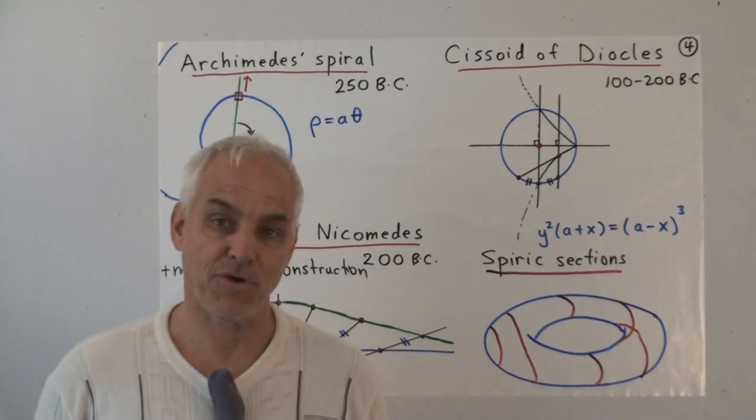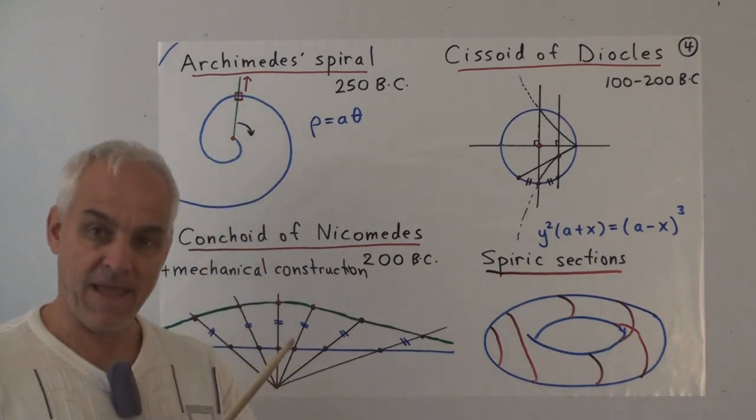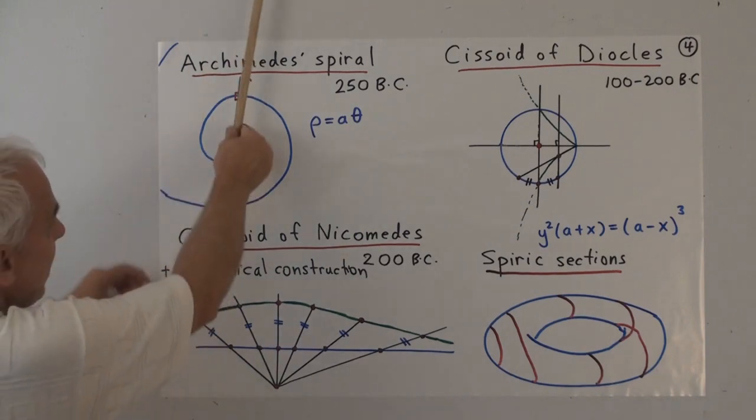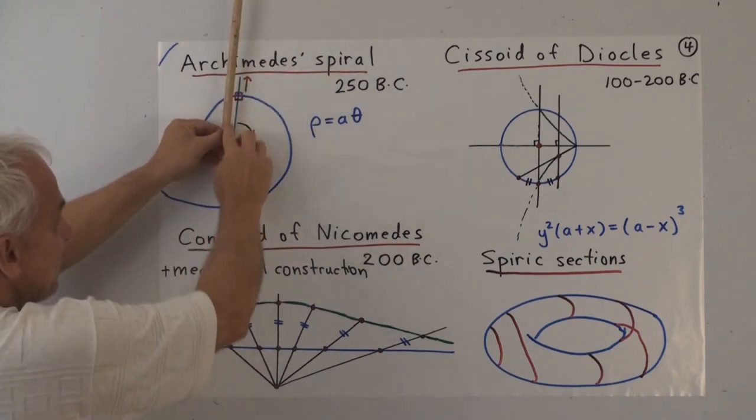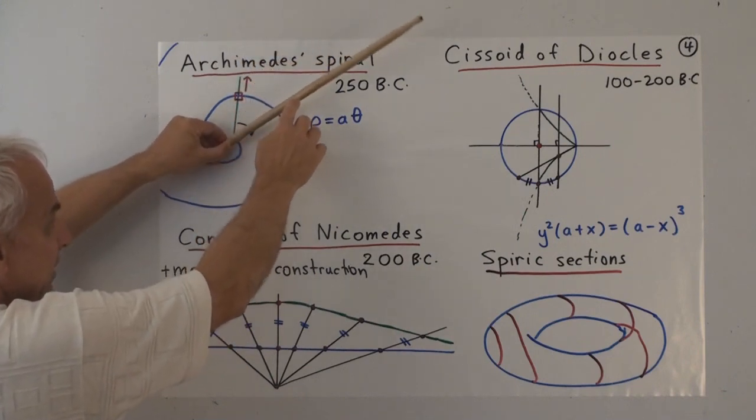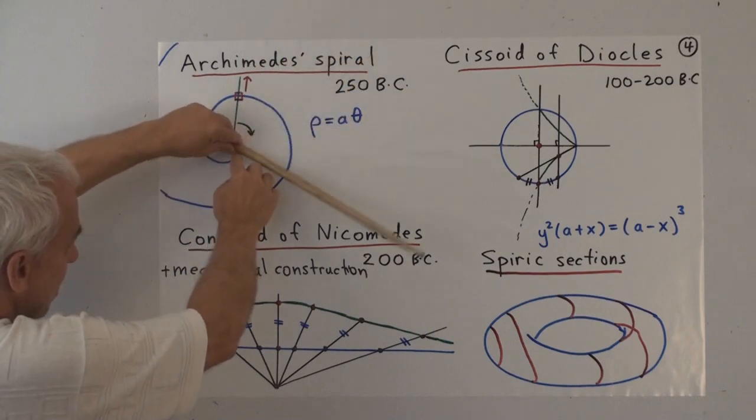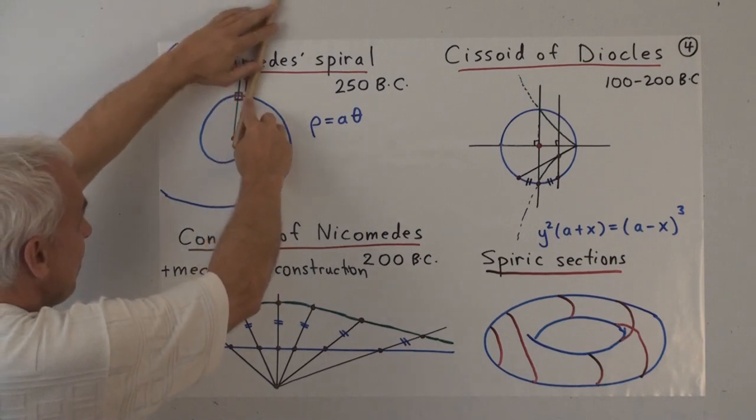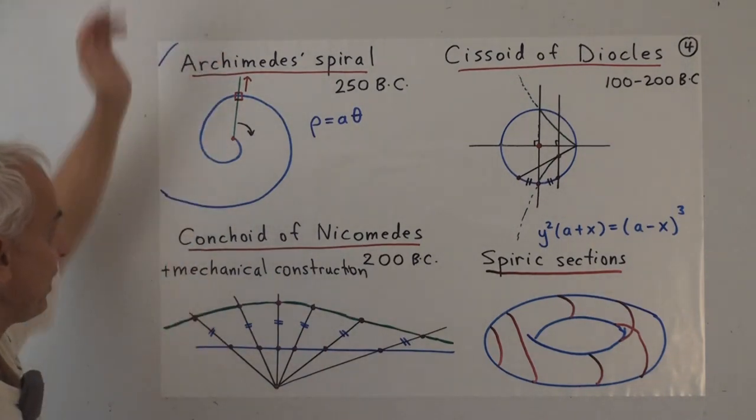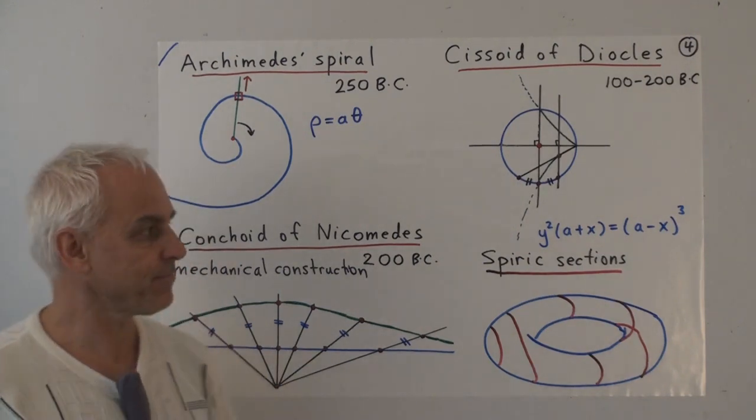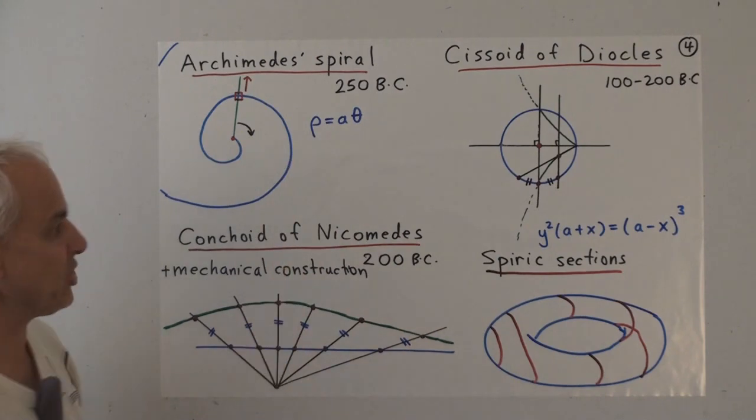But they also considered quite a few other curves, some of them very interesting. For example, Archimedes introduced the idea of a spiral. He thought very mechanically, physically. He imagined a line fixed at a point rotating uniformly about that point. And then imagine a particle moving linearly along that line at the same time that the ray is rotating. So if the particle starts there, then after a little while it's here, and then it's there. You get this spiral shape which goes on indefinitely. And he proved some very nice things about it. These days it's most easily described in polar coordinates using rho and theta.